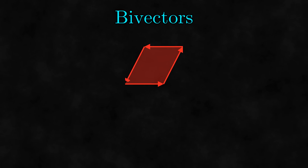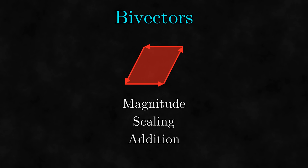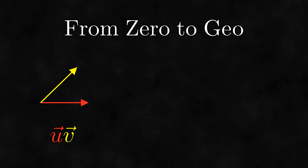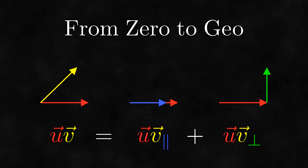In the last video, we looked at bivectors, which we currently think of as oriented plane segments. But what can we do with bivectors? In this video, we will explore some of the basic operations we can do on bivectors. This video is a part of From Zero to Geo, a series where we formulate geometric algebra, an incredibly powerful branch of mathematics, from the ground up.